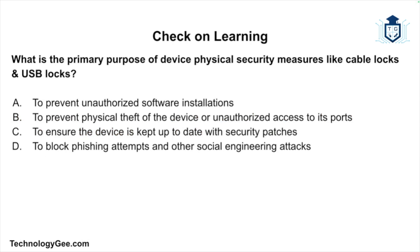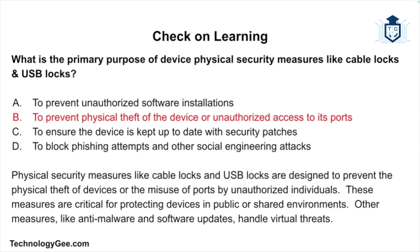The final question: what is the purpose of device physical security measures like cable locks and USB locks? Is it to prevent unauthorized software installations? To prevent physical theft of the device or unauthorized access to its ports? To ensure the device is kept up to date with security patches? Or to block phishing attempts and other social engineering attacks? The correct answer is to prevent physical theft of the device or unauthorized access to its ports. Physical security measures like cable locks and USB locks are designed to protect devices in public or shared environments, while anti-malware and software updates handle virtual threats.